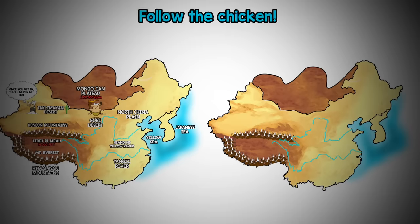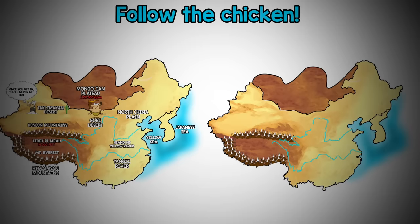Let's play Where's the Chicken? In this game, you will track the chicken as it appears on a blank map of China. Once the music stops, you will use a China map labeled with physical features to determine where the chicken ended up. Other animals may appear on the map, so don't forget to keep your eyes on the chicken.